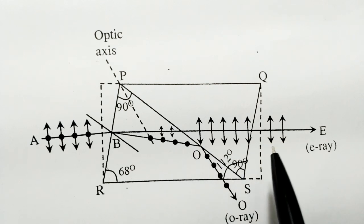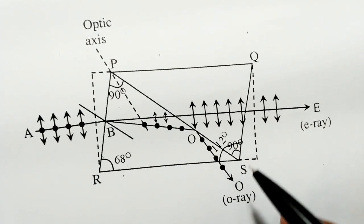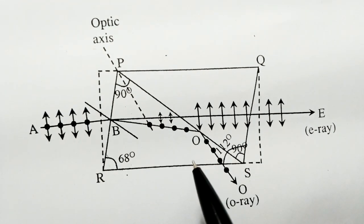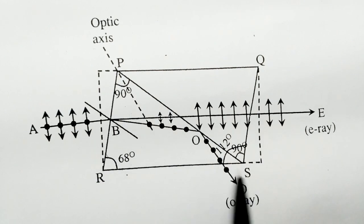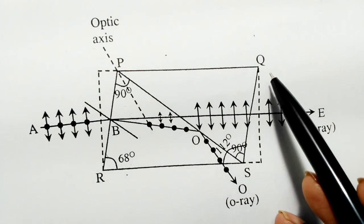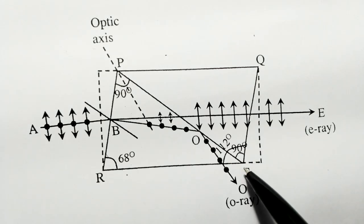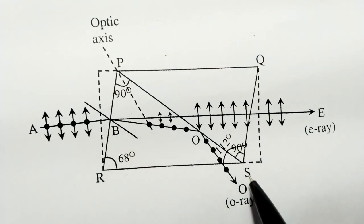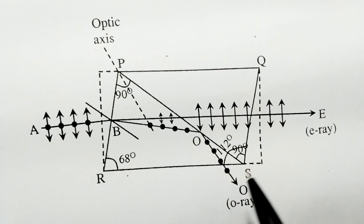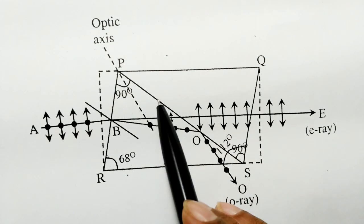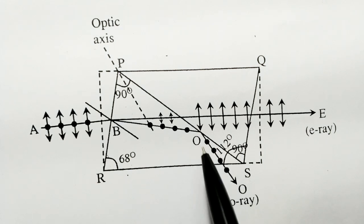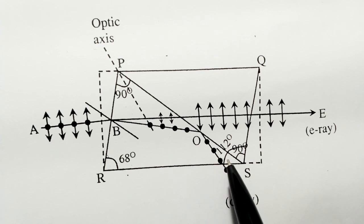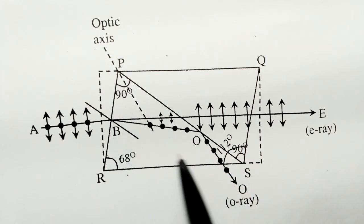We need to eliminate the ordinary ray and retain only the extraordinary ray. To do this, we cut the crystal along its diagonal. The faces PR and QS represent the two cut faces. The crystal is cut into two pieces by a plane perpendicular to the principal section.